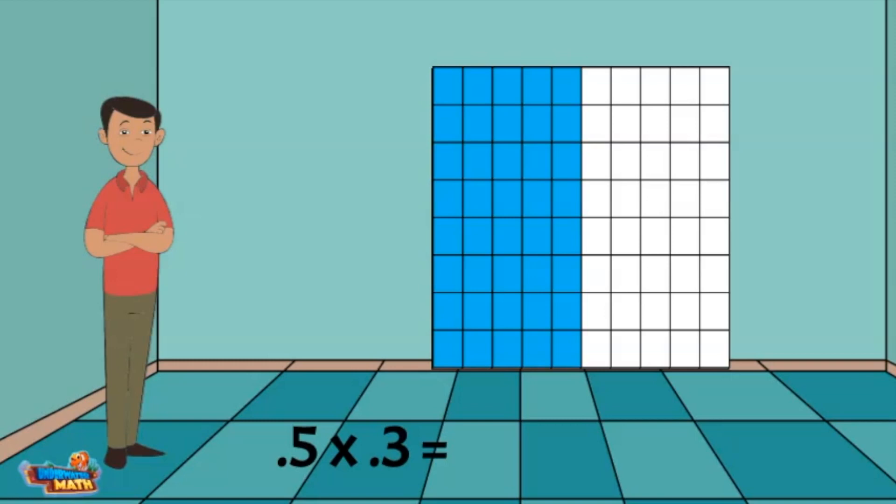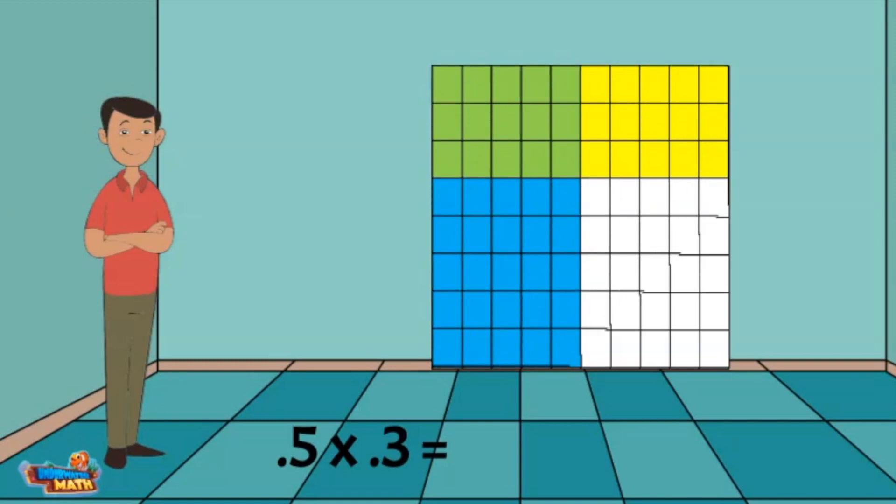Then I will shade in the three tenths horizontally like this. The areas where the blue and yellow overlap are green. To find the product to our multiplication problem, we need to determine the number of hundredths inside the green area. The green area is three hundredths high and five hundredths across. This gives us the product of fifteen hundredths. Onward to the last operation.